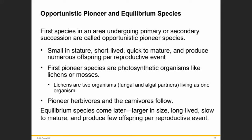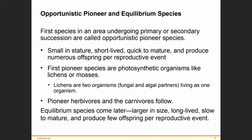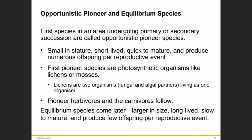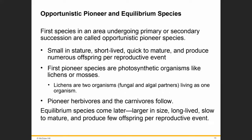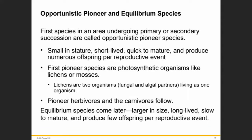The first species in an area undergoing primary or secondary succession are called opportunistic pioneer species. They are small in stature, short-lived, quick to mature, and produce numerous offspring per reproductive event. They are photosynthetic organisms that produce their own food. The equilibrium species come later — larger in size, long-lived, slow to mature, and producing few offspring per reproductive event.